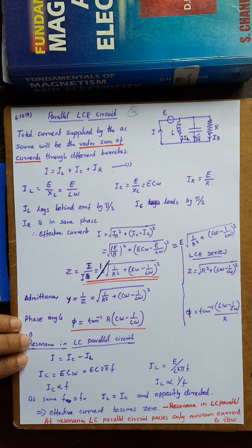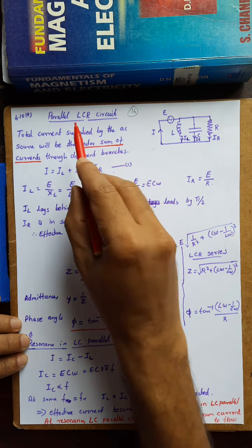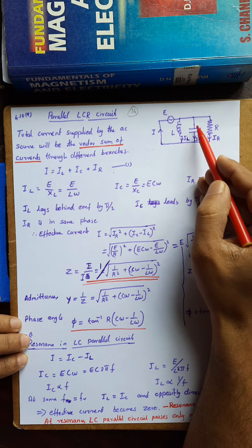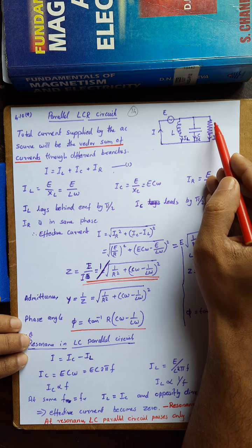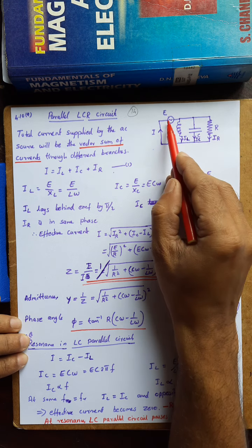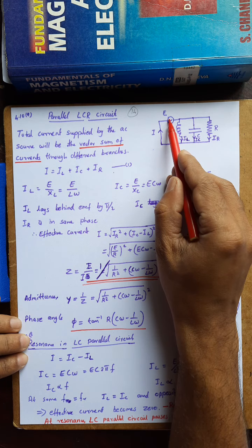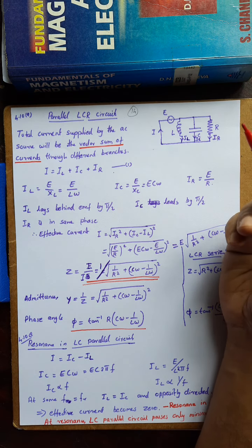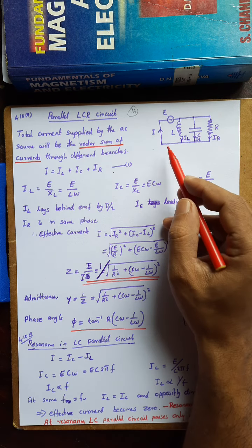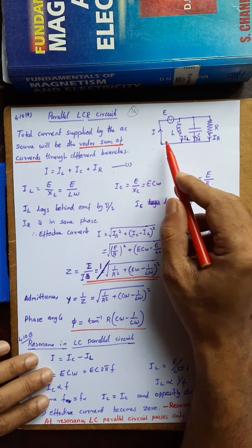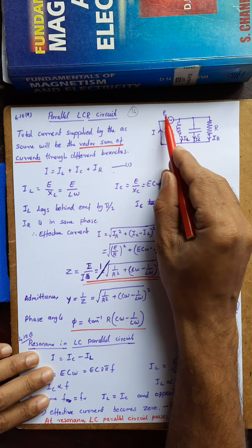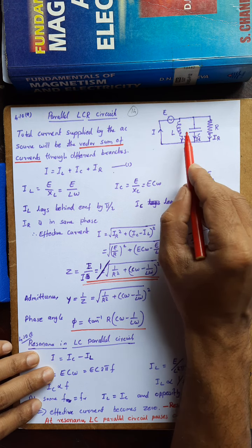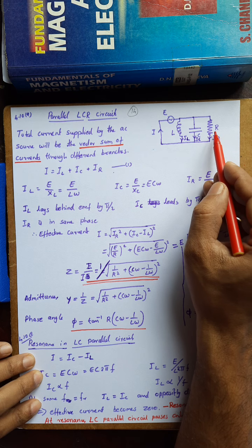In today's class, we will consider a parallel LCR circuit. The components — inductance, capacitance, and resistance — are connected in parallel to a source of AC EMF, E. The total current supplied by this AC source, that is I, will be a vector sum of the currents through the different branches.